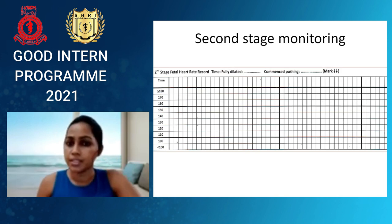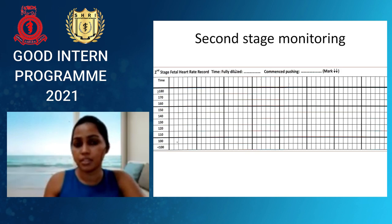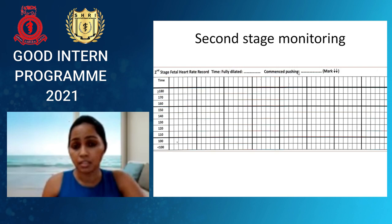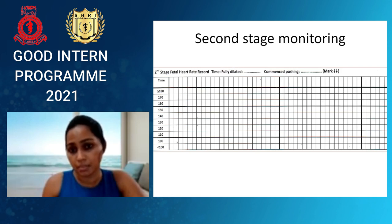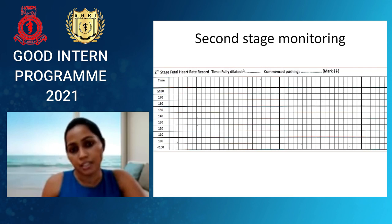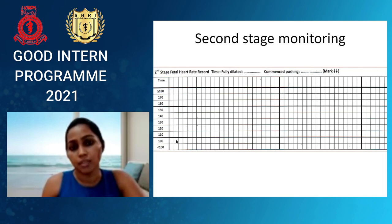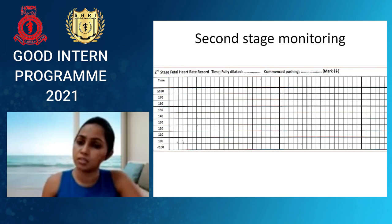The second stage monitoring section is in the lower part of the partogram. Here we mainly monitor fetal heart rate, and record the commencement of the pushing stage — the active second stage. The time of full dilatation is also marked here. In the passive phase of the second stage, fetal heart rate is monitored every 10 minutes. Once maternal pushing effort starts, fetal heart rate is monitored every 5 minutes.